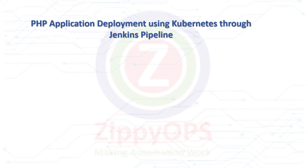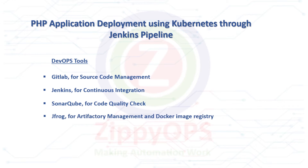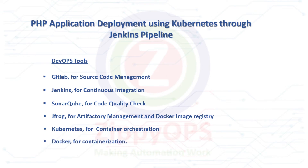The tools used in this PHP Application Deployment are: GitLab for Source Code Management, Jenkins for Continuous Integration, SonarQube for Code Quality Checks, JFrog for Artifactory Management and Docker Image Registry, Kubernetes for Container Orchestration, and Docker for Containerization.